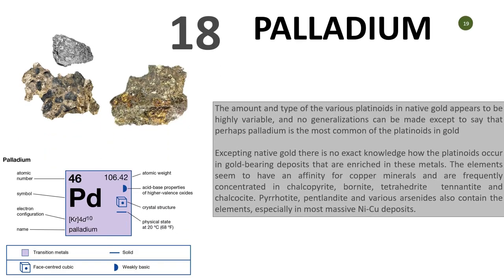Number eighteen is palladium. The amount and type of various platinoids in native gold appears to be highly variable. Palladium is perhaps the most common platinoid found in gold, though it occurs in very minor trace amounts. It can also be used to assess depths and ages of deposits. Palladium has a strong affinity for copper minerals and is frequently concentrated in copper minerals like chalcopyrite, tetrahedrite, and bornite.